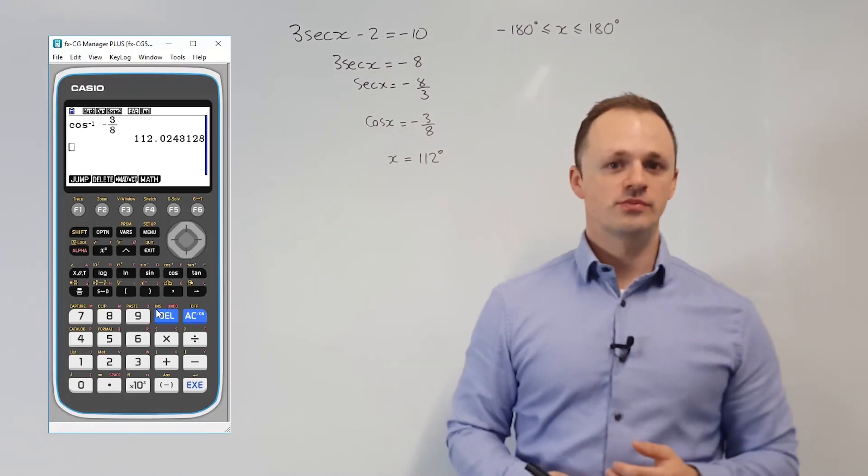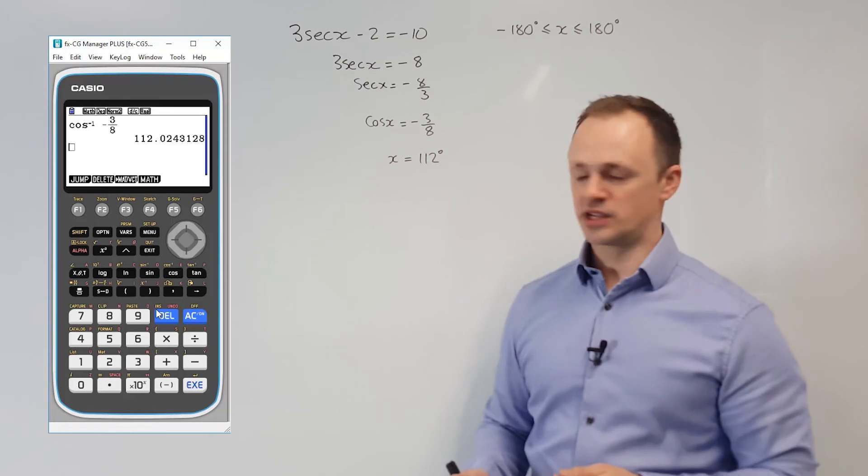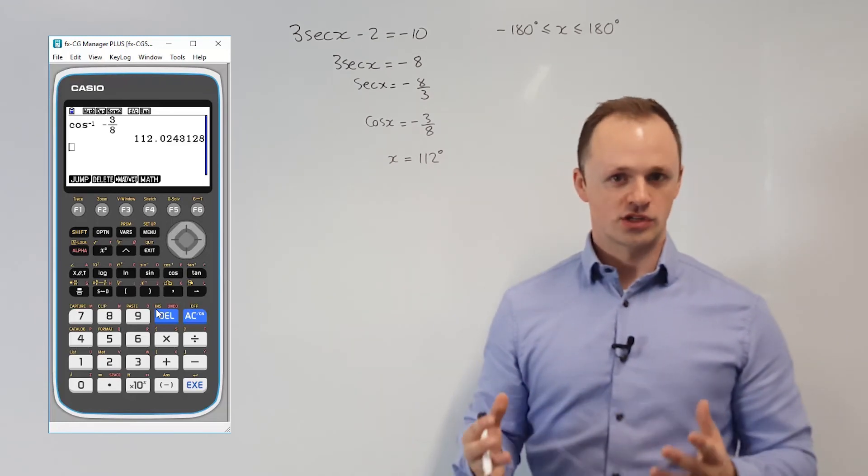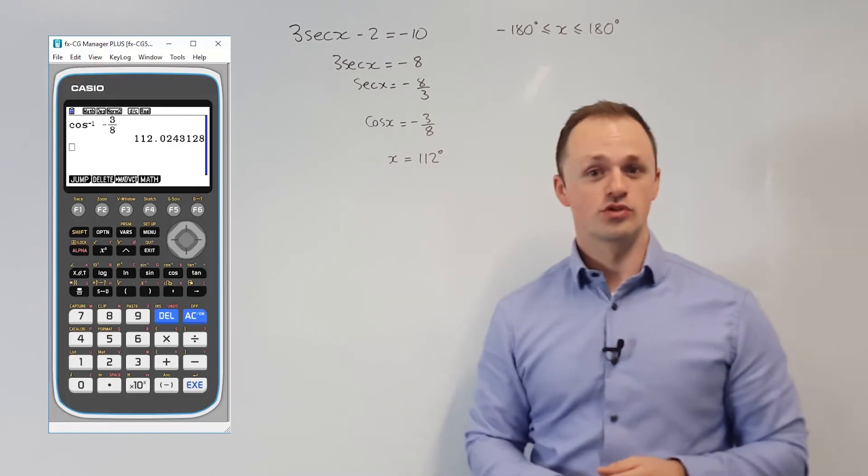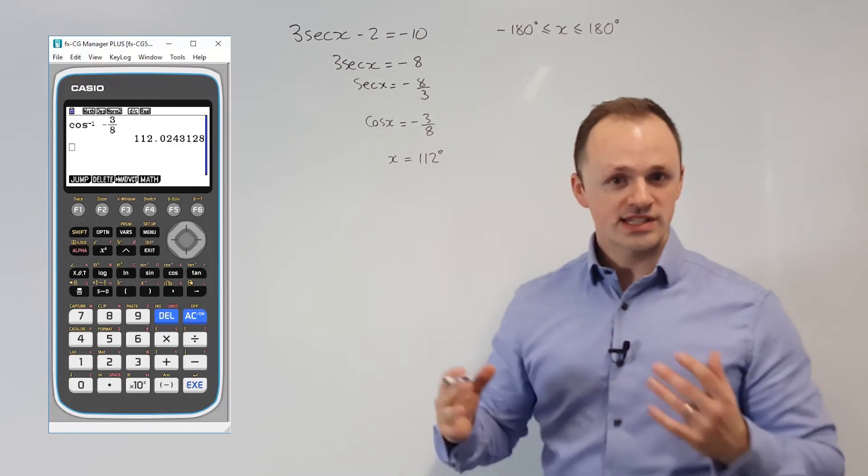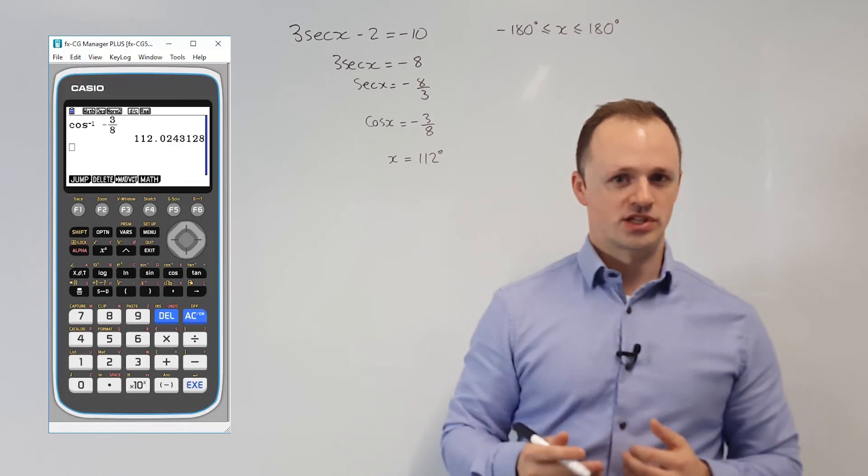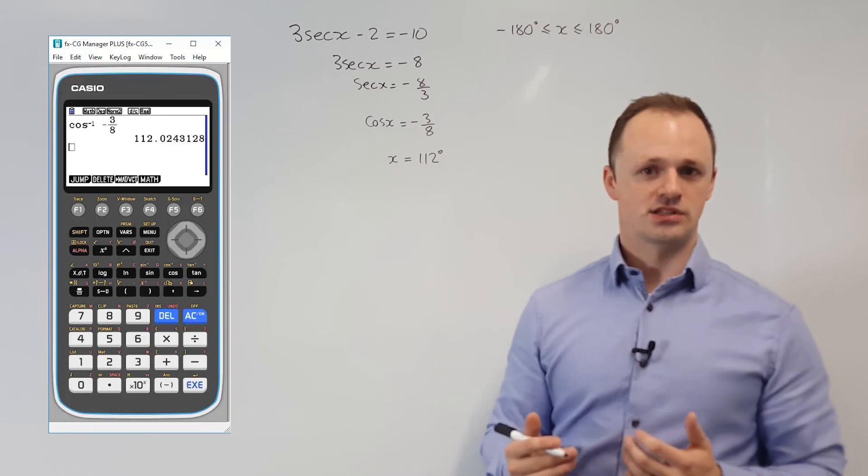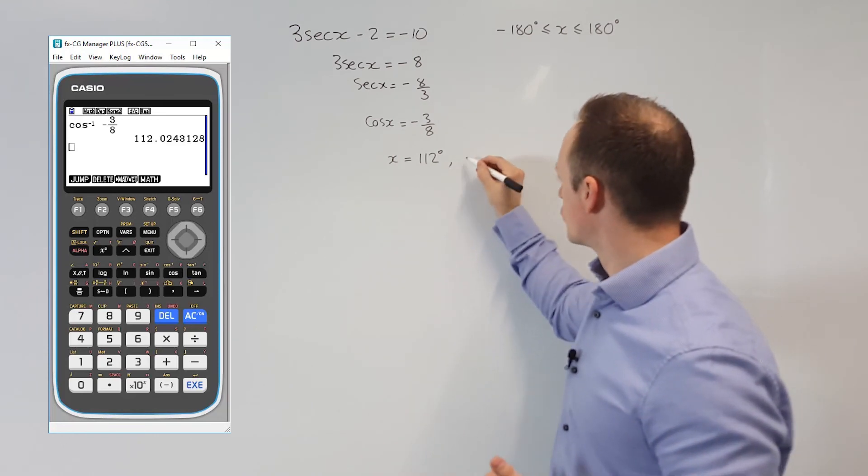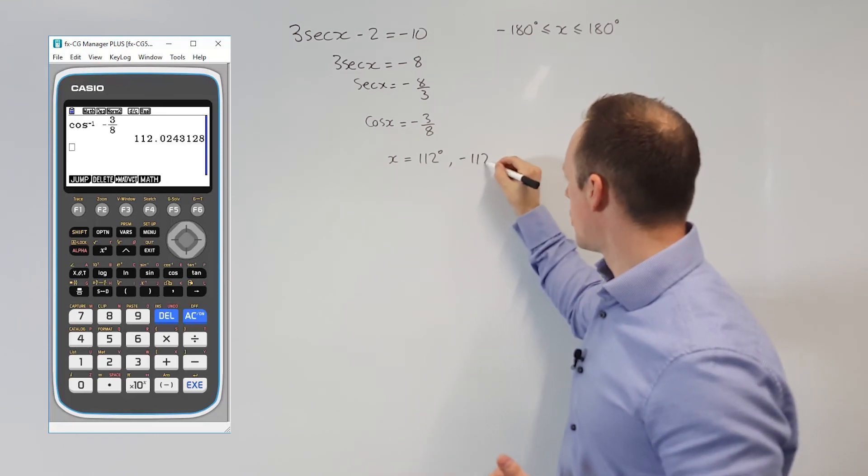To get a second solution, we need to use the symmetry property. We could do 360 minus our first solution, and that would give us a second solution, but it wouldn't be valid because it would be bigger than 180 degrees. So instead, I'm going to use the other symmetry property of cosine, which says that cosine theta is equal to cosine of minus theta. So the second solution would be minus 112 degrees.